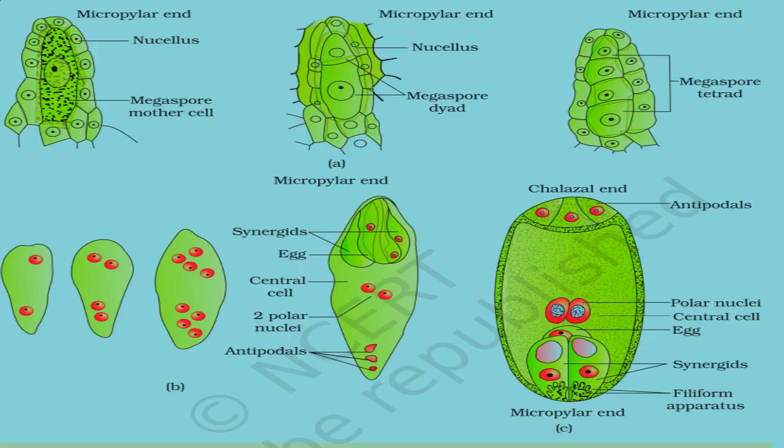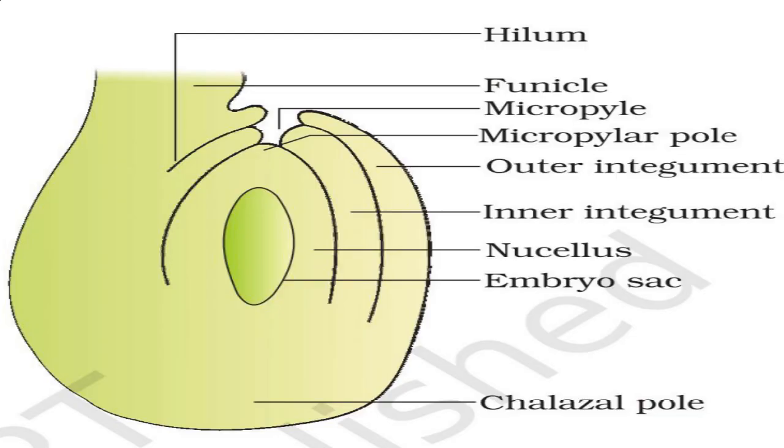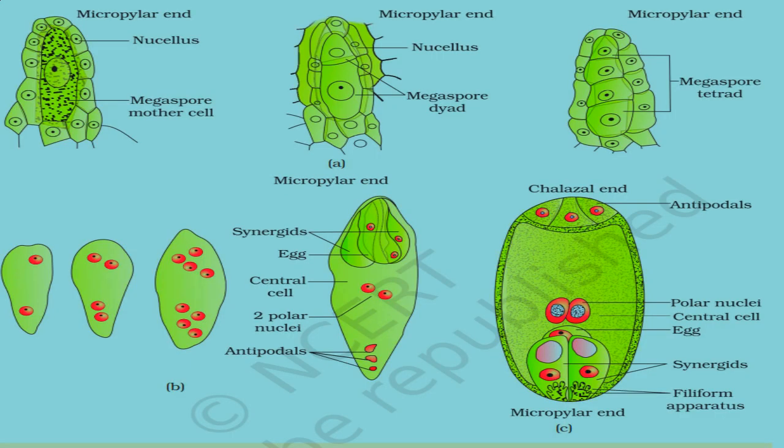Now, the formation of megaspores: the process of megaspore formation from a megaspore mother cell is called megasporogenesis. This happens inside the micropylar region of the nucellus, where a single large cell — the megaspore mother cell — can differentiate. The megaspore mother cell has dense cytoplasm and a large nucleus. It undergoes meiosis, producing four haploid megaspores arranged in a linear tetrad.